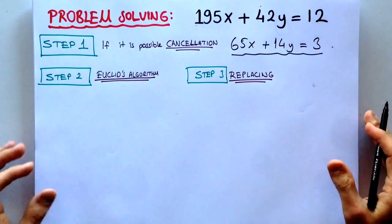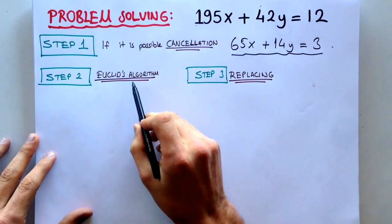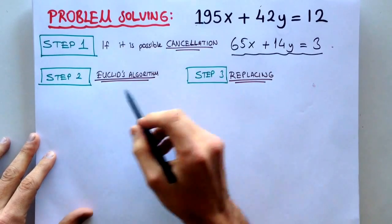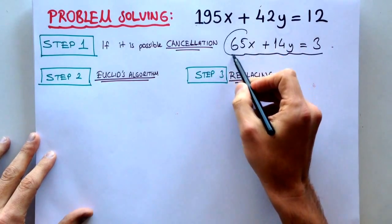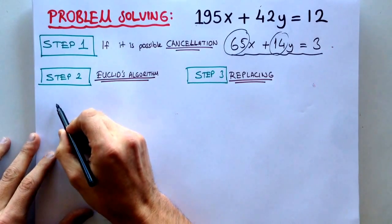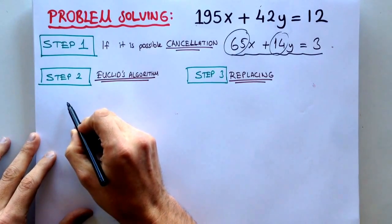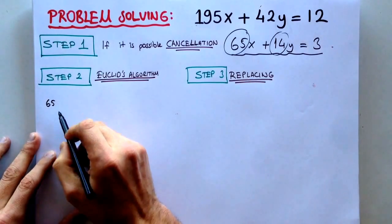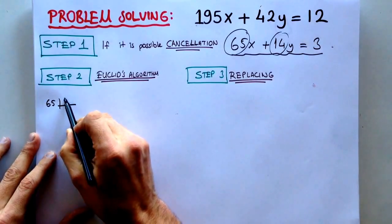And then first, we have to apply the Euclidean algorithm. Euclidean algorithm says that if we have coefficients 65, 14, we can write them by using the other one. For example, if we divide 65 into 14,